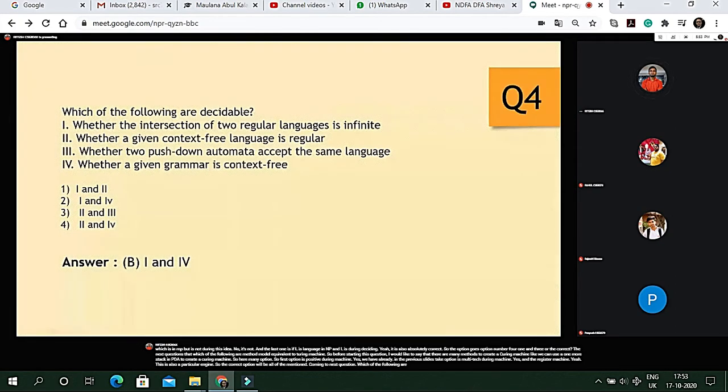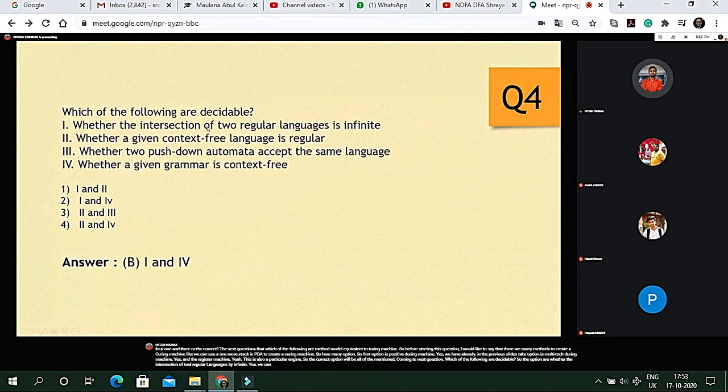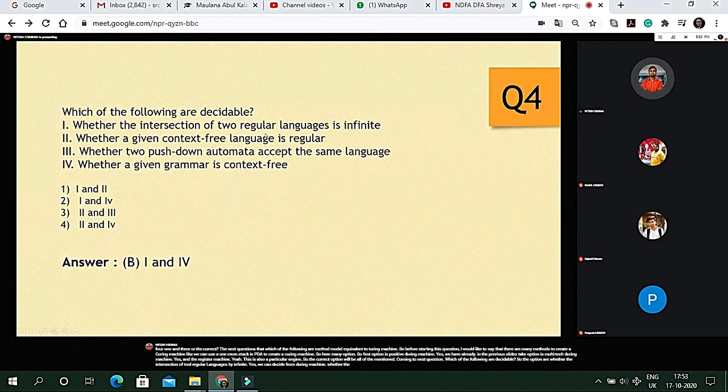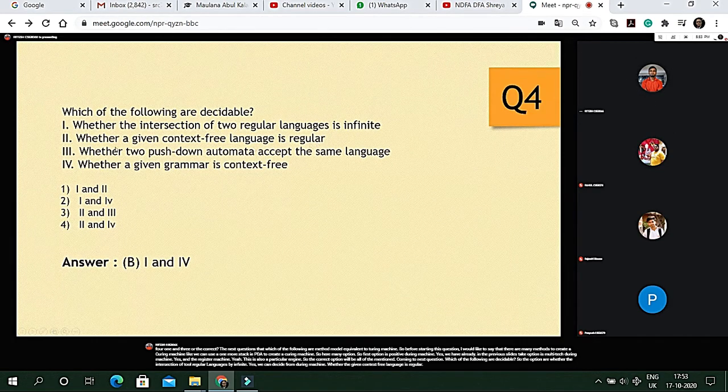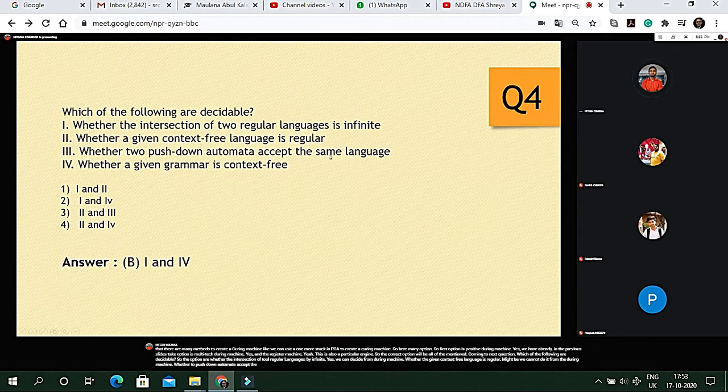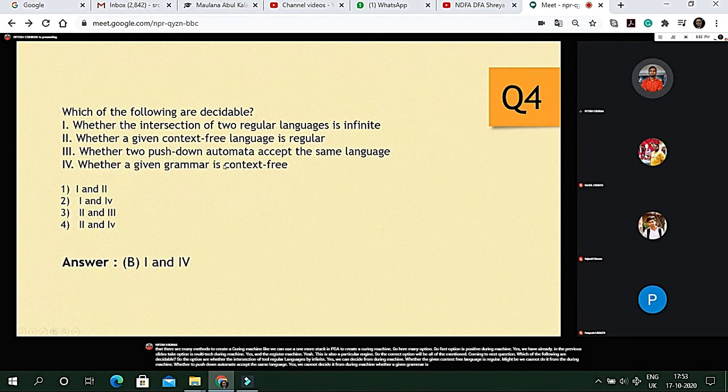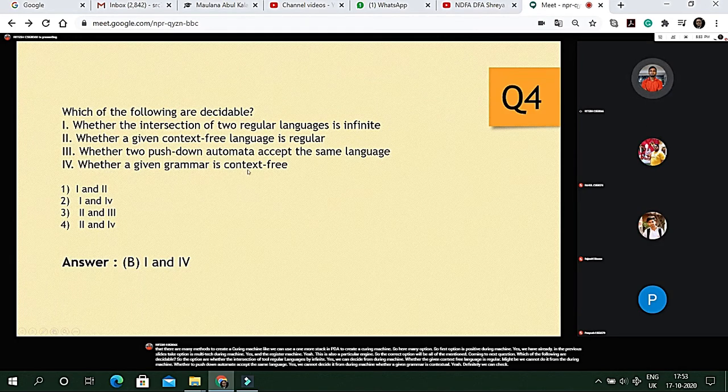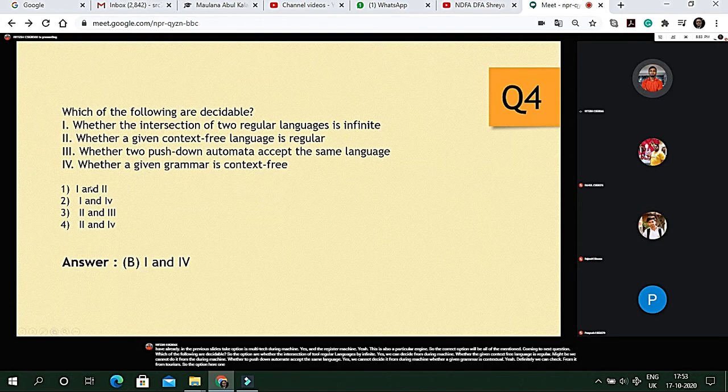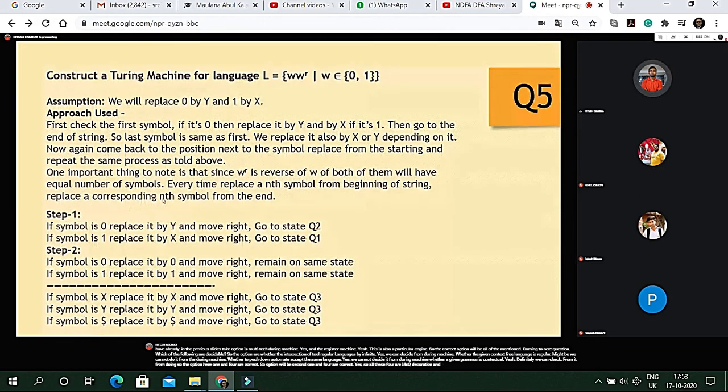Coming to next question. Which of the following are decidable? The options are whether the intersection of two regular language is infinite? Yes we can decide from Turing machine. Whether the given context free language is regular? We cannot do it from the Turing machine. Whether two push down automata accept the same language? Yes we cannot decide it from Turing machine. Whether a given grammar is contextual? Yeah definitely we can check from Turing machine. So the option here one and four are correct. So option will be second. One and four are correct.